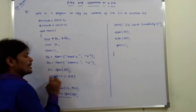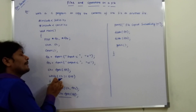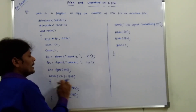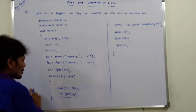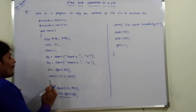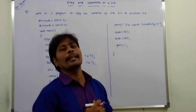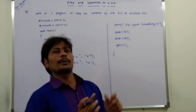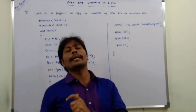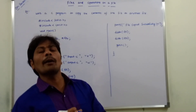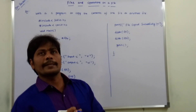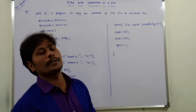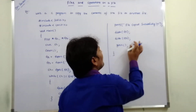Once this condition is false — that is, when the reading character is end of file — the while loop condition fails. Then it goes to the next statement after the closing brace of the while loop, and printf prints file copied successfully. The entire data character by character is copied into output.c. Once the reading and writing operations are completed, we close both files using fclose — fclose of fp1 and fclose of fp2.